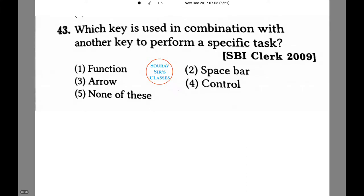In the next question, we are asked which key is used in combination with another key to perform a specific task. We are given four options: Function, spacebar, arrow, and control. The function is used to create space between words when writing in the computer.